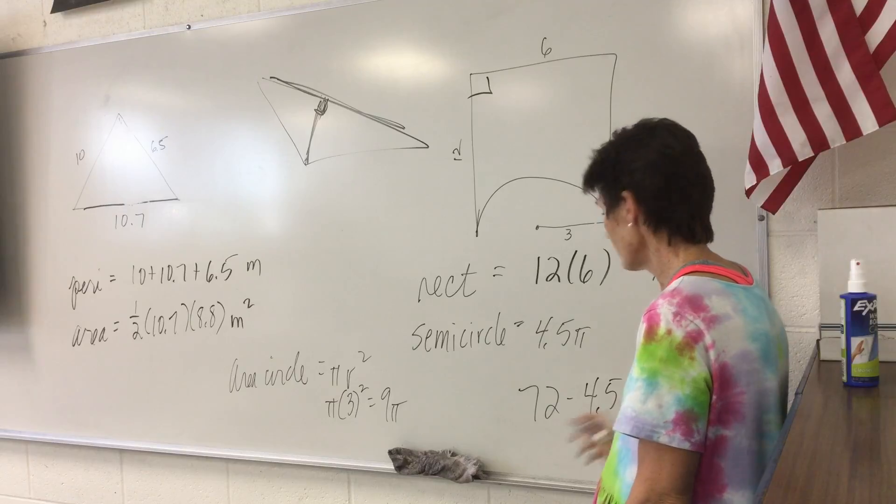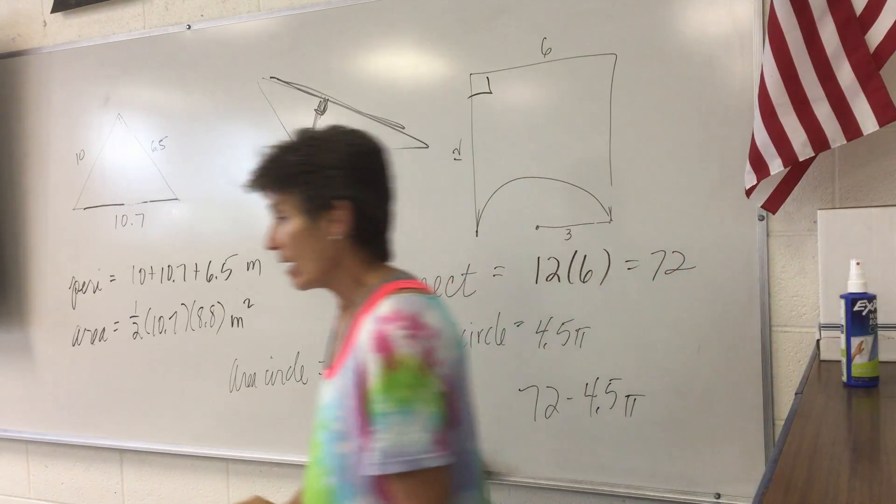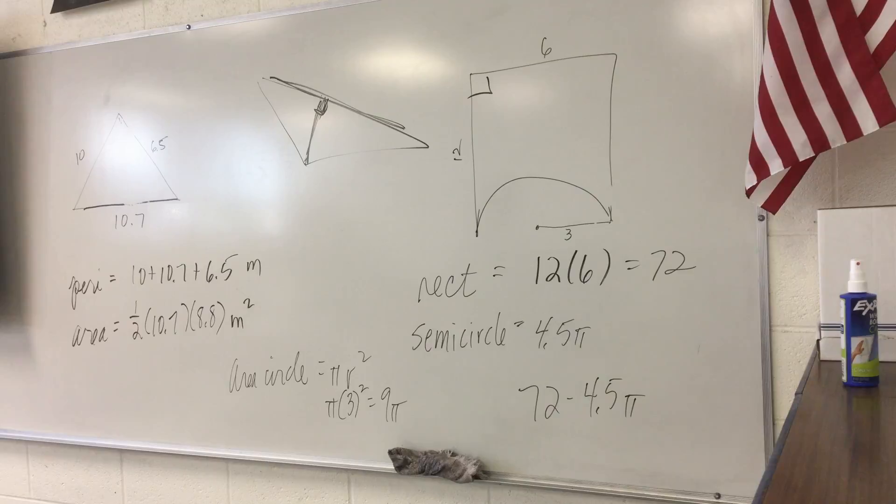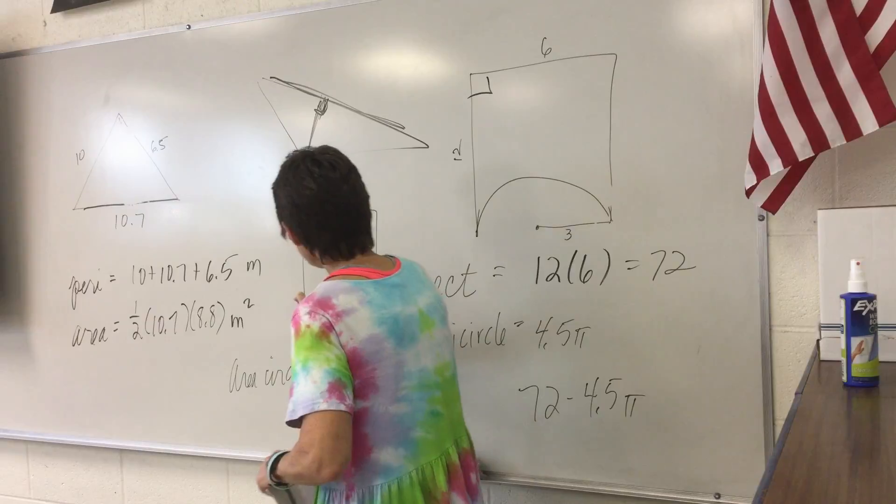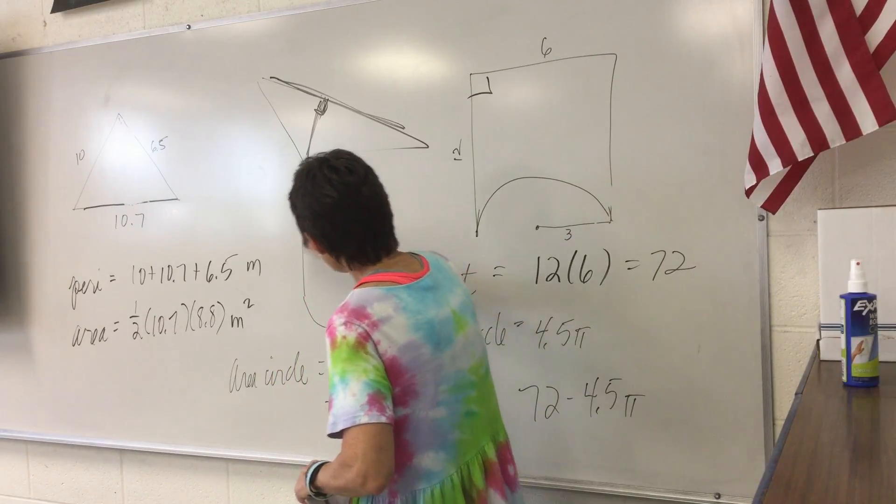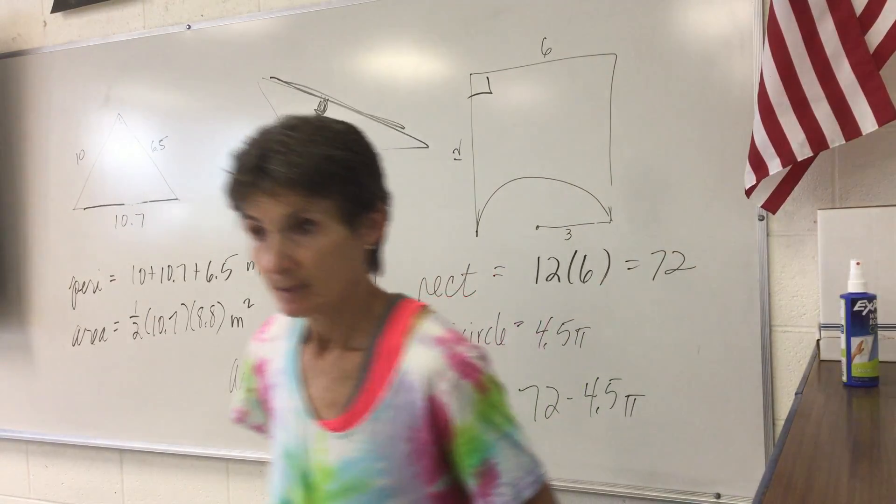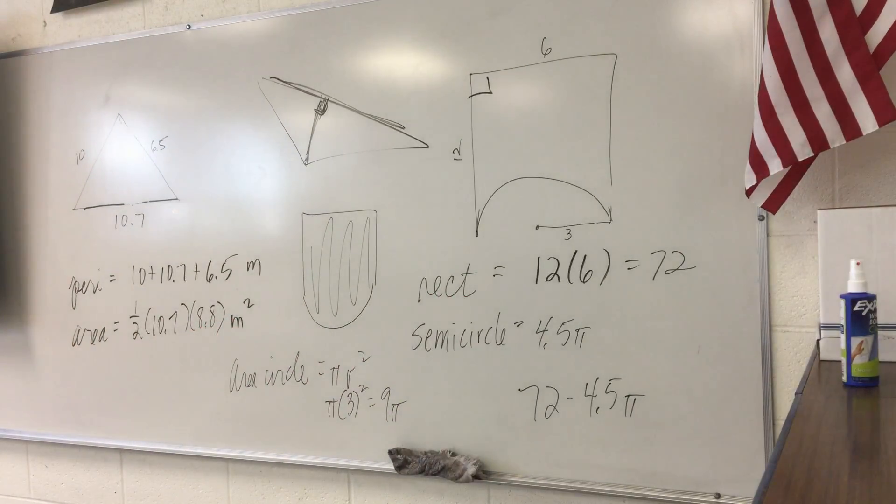Now, obviously, if you get 72 at 4 and a half pi, you're in your partial credit because you've got those areas right. But if you want full credit, you have to have them subtracted in the right order. Okay? If the picture had looked like this, where we had the same rectangle, but the circle went like this, then you would add. Then you would add because you're adding on the area of the circle, not taking it out. Okay?